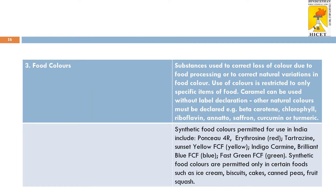The next category of food additives is food colors. These are substances used to correct loss of color due to processing, and the use of food colors is restricted to only specific food items. One food color that can be used without any label declaration is caramel, whereas other natural colors must be declared on the labeling — examples include beta-carotene, chlorophyll, and riboflavin. Synthetic food colors permitted for use in India include Ponceau 4R, Erythrosine, Tartrazine, Sunset Yellow, and Indigo Carmine; these are permitted only in certain foods such as ice creams, biscuits, cakes, canned peas, and squash.